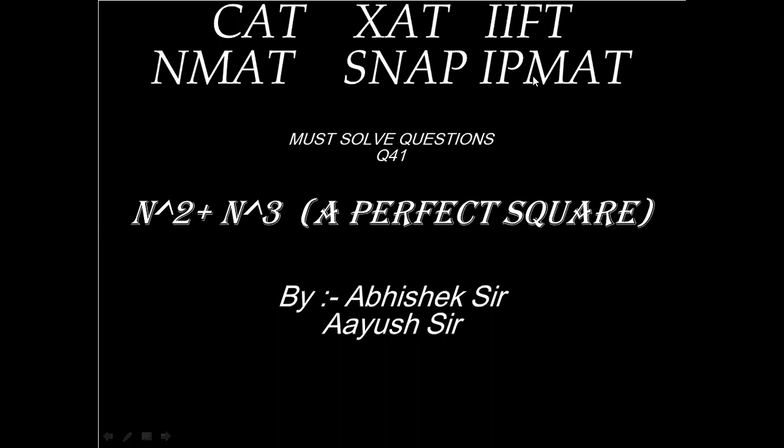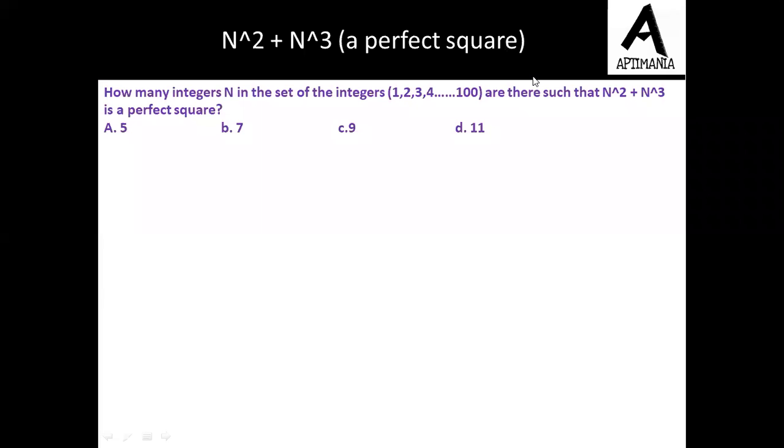Hello, in this video we are going to discuss a question based on property of number. Question is, how many integers n in the set of the integers from 1 to 100 are there such that n square plus n cube is a perfect square?